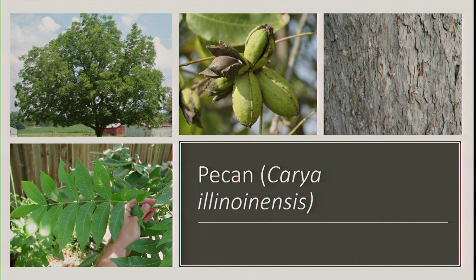Pecan — everyone knows what a pecan looks like. It has a pinnately compound leaf structure, shaggy bark, and obviously pecans. You might confuse it with black walnut, which looks very similar, but if you have the nut, the walnut is spherical while the pecan is long and oblong. Fun fact: black walnuts are allelopathic, meaning the roots secrete toxins that kill off other seedlings and trees to reduce competition. So if you have a black walnut killing off smaller trees in your yard, it could be those allelopathic toxins.